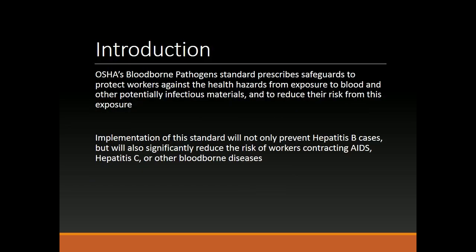Introduction. OSHA's Bloodborne Pathogens standard prescribes safeguards to protect workers against the health hazards from exposure to blood and other potentially infectious materials, and to reduce their risk from this exposure. Implementation of this standard will not only prevent Hepatitis B cases, but will also significantly reduce the risk of workers contracting AIDS, Hepatitis C, or other bloodborne diseases.